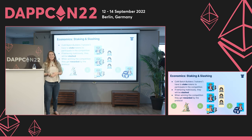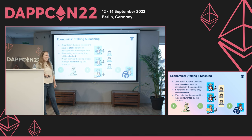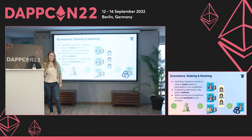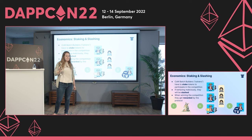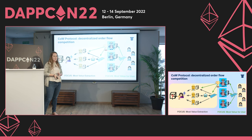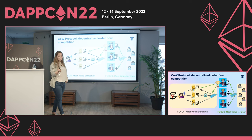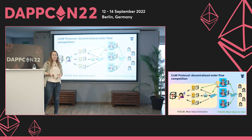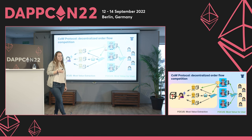How do we keep our CoW batch builders honest? Similar to proof-of-stake, a CoW batch builder stakes some tokens. Once they've done this they can participate in the competition. If they win the competition they get rewards paid out, and if they act maliciously their stake would be slashed. The one that finds the best solution — meaning the best prices for users — wins and then executes the transaction on-chain.